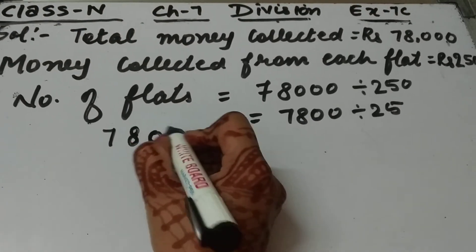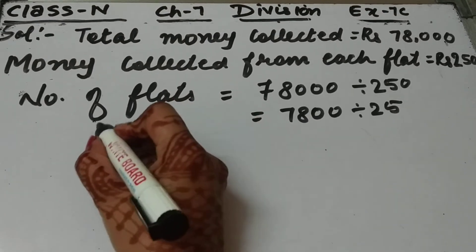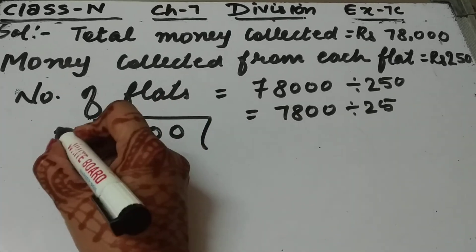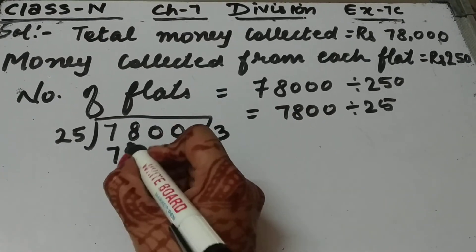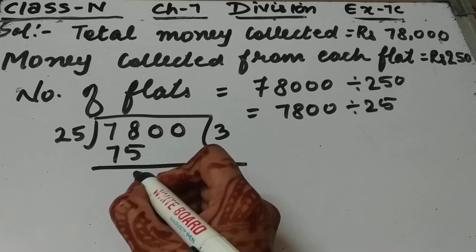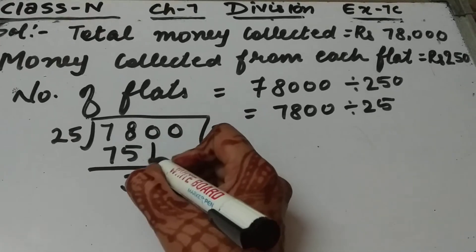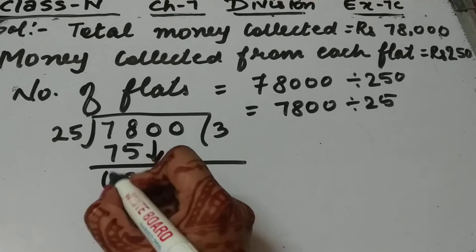7,800 divided by 25. 25, 3 is a 75. Subtract these two numbers. 8 minus 5 is 3. Bring this 0 down. This is 0.